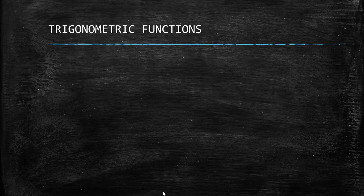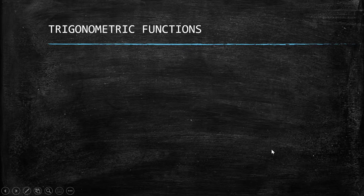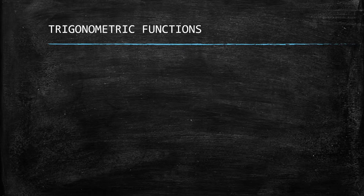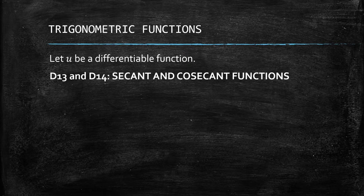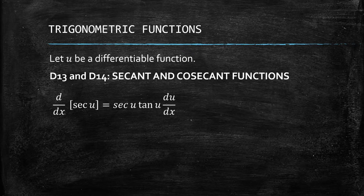Welcome back to lesson 9.2. We're continuing with derivatives of trigonometric functions, and we're down to the last two of this part: D13 and D14 — the secant and cosecant functions.